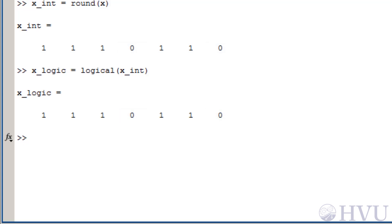There is a difference between the 0s and 1s in the x underscore INT array and those in the x underscore LOGIC array, even though they look the same.